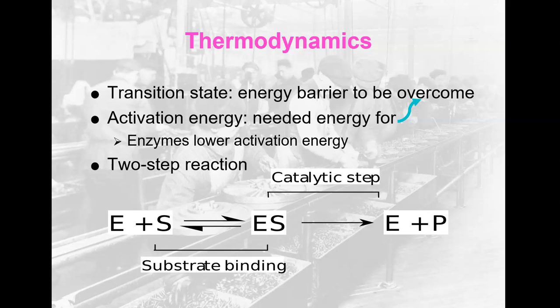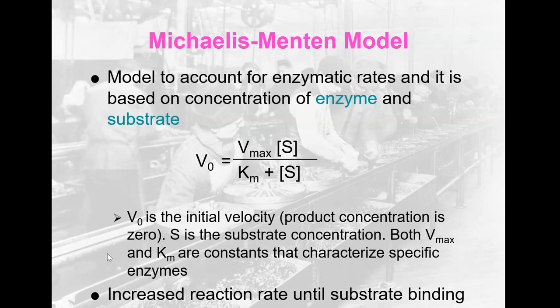Regarding thermodynamics of enzymatic reactions: there is a transition state, which is the energy barrier that has to be overcome for the reaction to take place. Activation energy is the energy needed to overcome that transition state, and enzymes help lower that activation energy, making it easier for reactions to happen. It is always a two-step reaction: the enzyme binds with the substrate or substrates to form an enzyme-substrate complex, then a catalytic step produces the product. The enzyme is then released and picks up the next substrate, repeating the reaction over and over again.